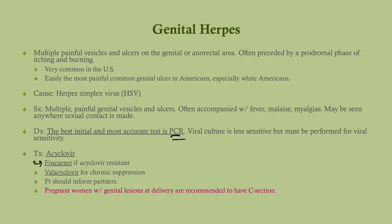The best treatment is acyclovir. However, some strains are resistant to acyclovir; if there's no response, you go with foscarnet. The wrong answer is ganciclovir — that's for CMV. The patient can be put on acyclovir or the more convenient valacyclovir for chronic suppression to prevent eruptions. Patients should inform partners with any STD. Pregnant women with genital lesions at the time of delivery are recommended to have a C-section — an important OB-GYN question.